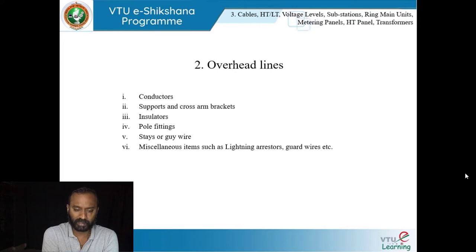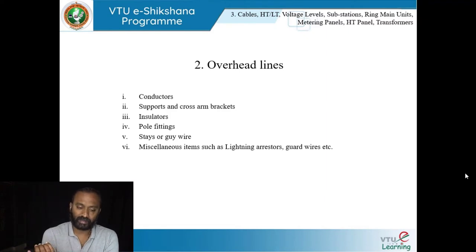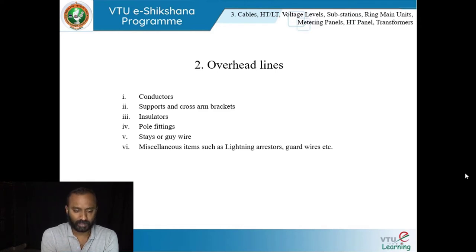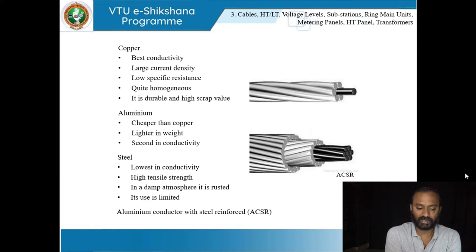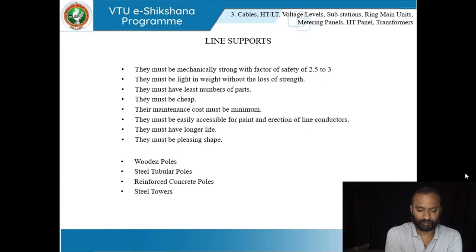Having completed the substation part, moving on to overhead lines. What essentially comprises an overhead line is your conductors — the actual carrier of electricity — supports and cross-arm brackets, insulators, pole fittings, stay or guy wire, and miscellaneous items such as lightning arrestors and sign boards. Conductors: copper is the best conductor as it allows the smoothest possible flow of electrons. We also have aluminium, steel, and ACSR — aluminium conductor with steel reinforcement.